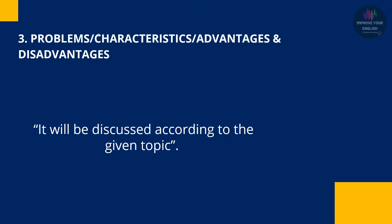Third step میں ہم problems, characteristics، یا پھر advantages and disadvantages کو discuss کرتے ہیں۔ یہ topic پر depend کرے گا — it will be discussed according to the given topic۔ مثال کے طور پر کسی شہر کے بارے میں بات کریں تو اس کی characteristics یا problems ہوں گی۔ کسی person کی بات کریں تو اس کی characteristics discuss کریں گے۔ کوئی ایسا topic جو فائدہ بھی دے اور نقصان بھی تو advantages اور disadvantages discuss کریں گے۔ تو یہ third step totally depend کرے گا ہمارے topic پر۔